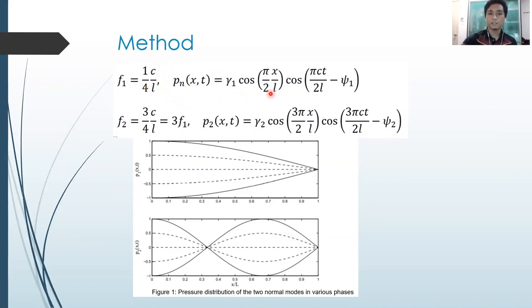This is what we will have for P1 and P2. If we plot this equation, we will have this distribution for pressure. This is for mode one and this is for mode two, the two normal modes. And this pressure is varying differently based on the corresponding phases.